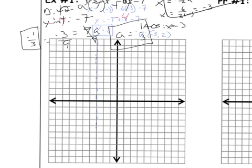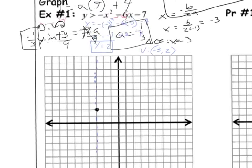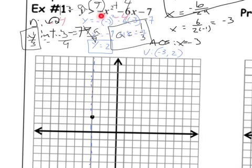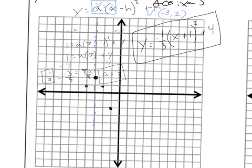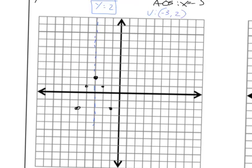Let's plot that — negative 3, 2. Now let's take a look at the original function. It's a negative, so we know it's pointing down — but it's just a negative 1x squared. So this follows that normal pattern where we go over 1, down 1; over 1, down 1; over 2, down 4; over 2, down 4. So this is actually pretty easy to graph. We had a y-intercept at negative 7, so we can go down 7. Let's count real quick: 1, 2, 3, 4, 5, 6, 7. And technically, that'd be over 3, down 9 — 2 and then 7 is 9.